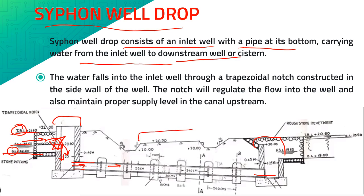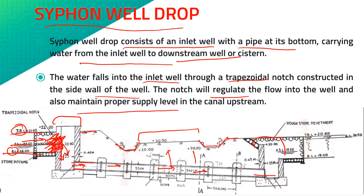This is the road section above this pipe. This pipe goes under the road section, and this is the drain provided for the road section. These are the embankments on the side of the road section. The water falls into the inlet well through the trapezoidal notch constructed in the side of the well. This trapezoidal notch will regulate the flow into the well and also maintain proper supply level in the upstream canal.